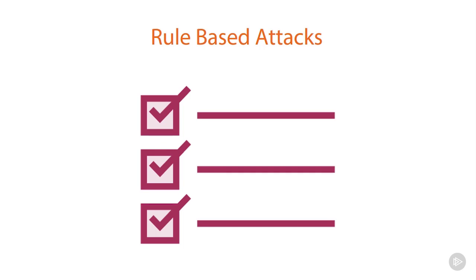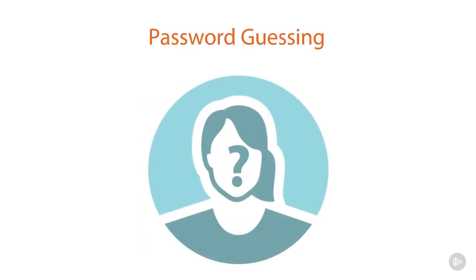If all else fails and we still haven't retrieved the important passwords, we can also implement a password guessing scheme. I've actually been more successful with password guessing than anything else, because as you social engineer somebody, people make passwords based on things they know or things that are around them. Often I'll be in an office and simply look around at words that may be displayed — such as the model of the monitor, or any signage nearby. You'd be surprised how many times I get in using what I see, as well as what I know about that person or target.